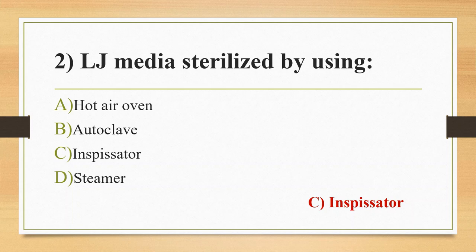Looking at other options: Hot air oven sterilizes glasswares, metal instruments like forceps, scissors, glass syringes, swabs, and pharmaceutical products such as liquid paraffin, dusting powder, fats, and grease. Its holding period is 160 degrees Celsius for half an hour.